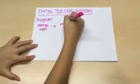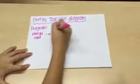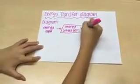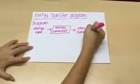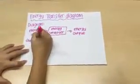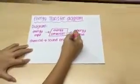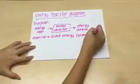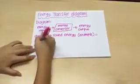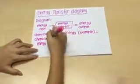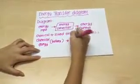Energy transfer diagram. The diagram shows energy input going into an energy converter, which turns to energy output. An example of an energy transfer diagram is chemical energy into sound energy: chemical energy from a battery, into a radio, into sound energy.